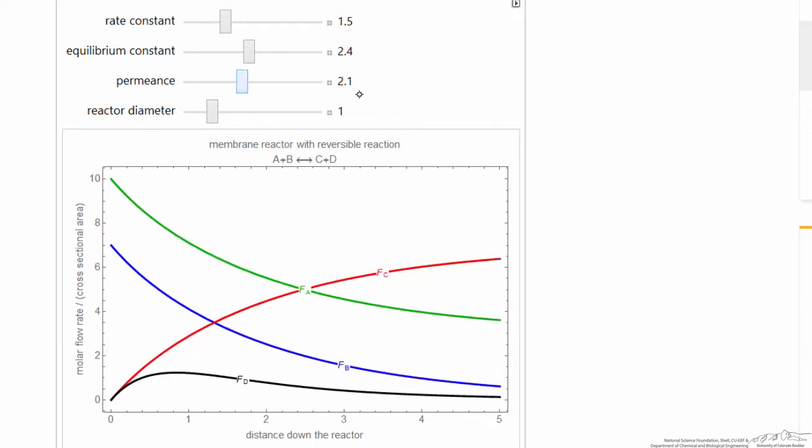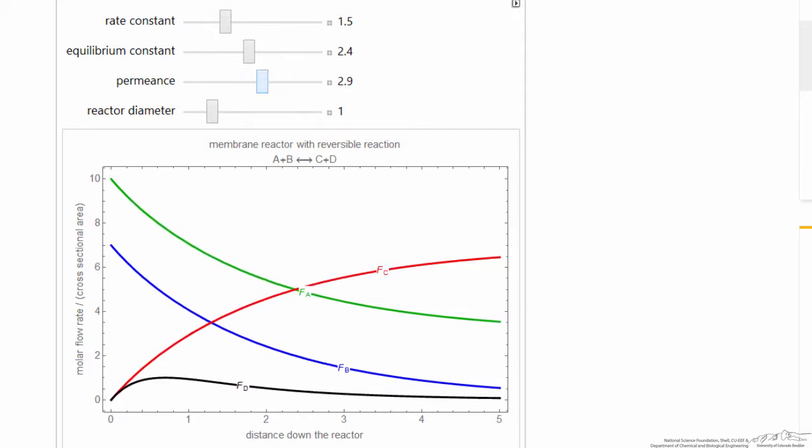So by increasing the permeance, you'll notice as I move permeance to right, the flow rate of C continues to increase.